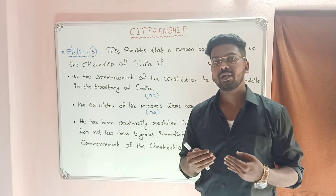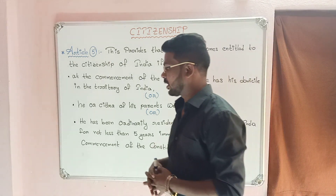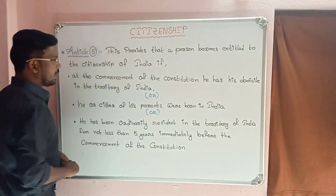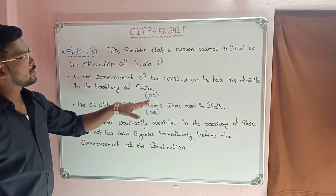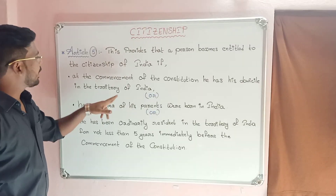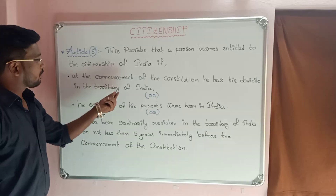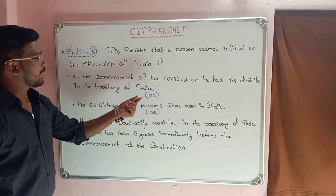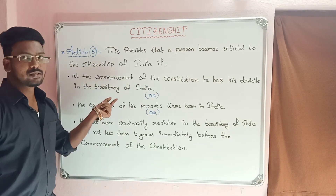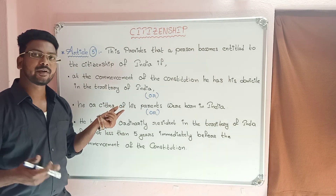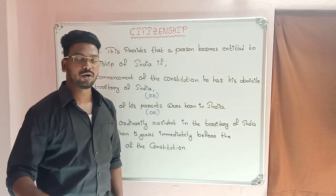Article number 5: This provides that a person becomes entitled to the citizenship of India if, at the commencement of the Constitution, he has a domicile in the territory of India. Domicile means residence — residing in India.